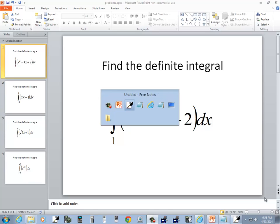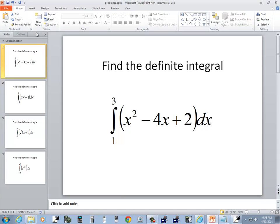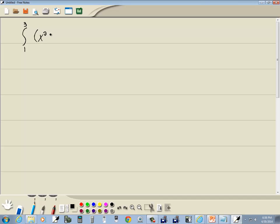Let's take a look at this problem. Find the integral, lower bound is 1, upper bound is 3, of x² minus 4x plus 2 dx.